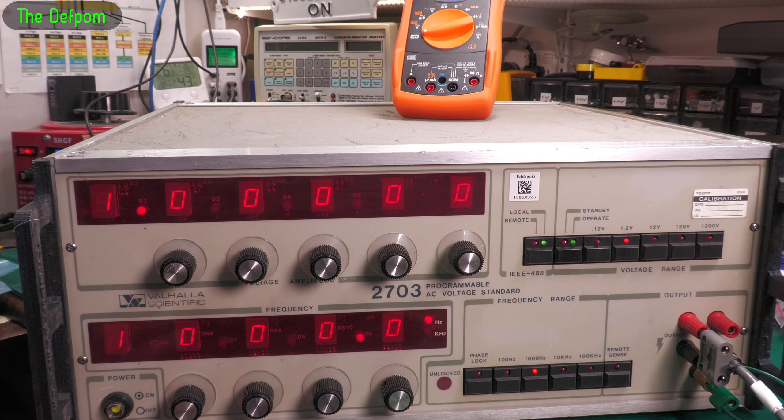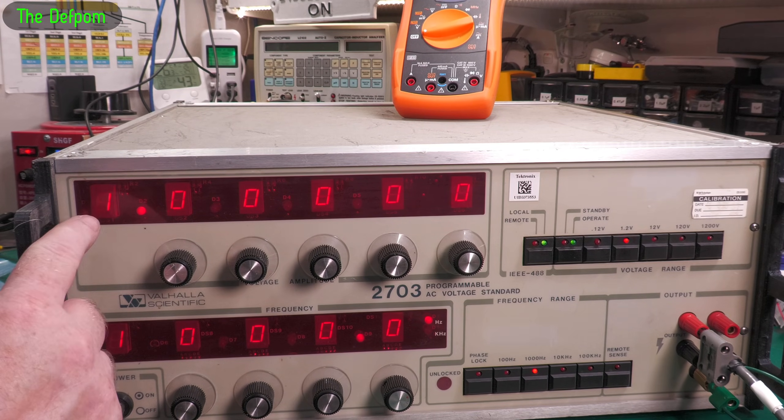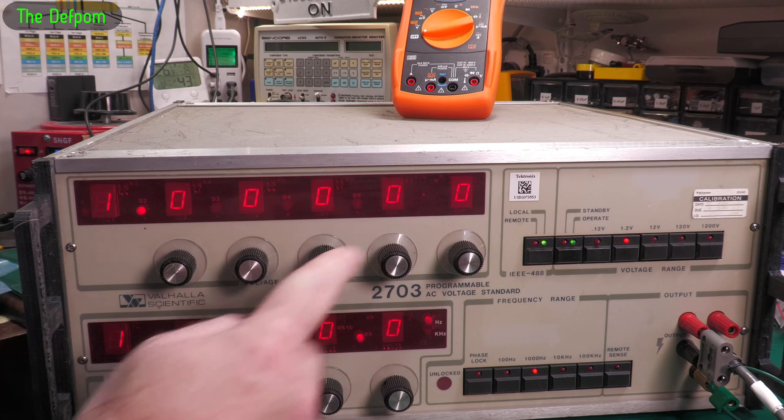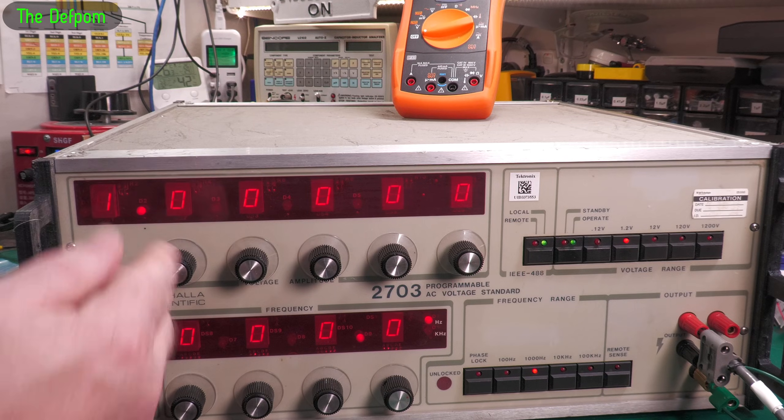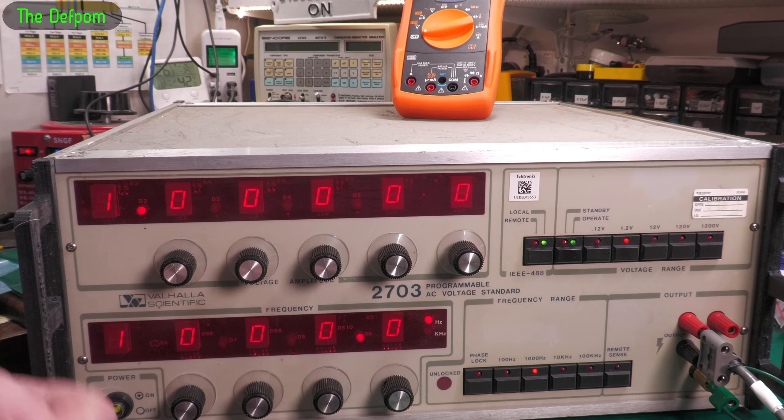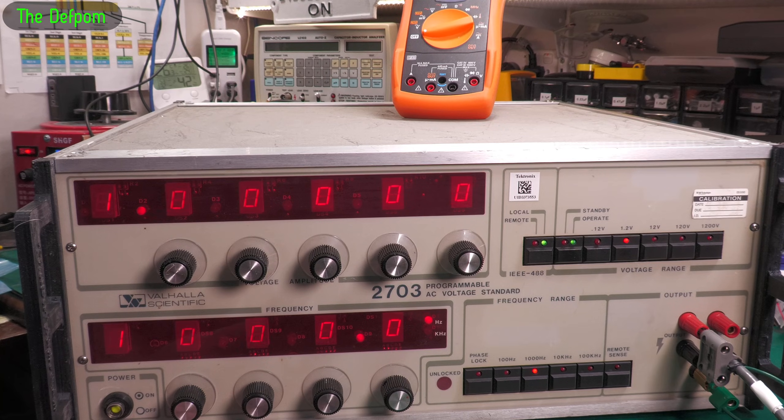The calibration manual only mentions setting up the actual value here, there's nothing about zeroing. There are some trimmers inside for doing zeroing, but they're not for doing big offsets like this. They're just for fine-tuning, so it definitely isn't them.